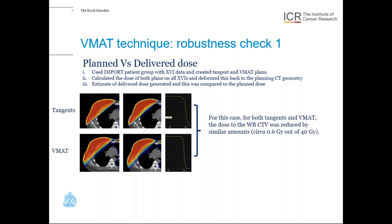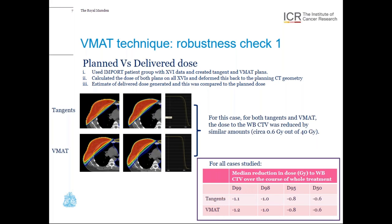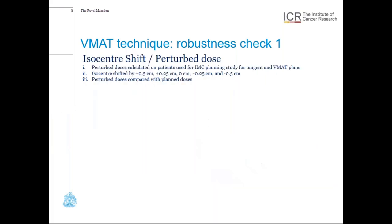We compared the estimated delivered dose to the planned dose. The top row shows the planned dose distribution and, to the right, our estimate of delivered dose, alongside DVHs where the solid line represents planned dose and the dotted line represents estimated delivered dose to the whole breast CTV. The corresponding data for a typical VMAT plan is shown below. For this case, both tangents and the VMAT plan showed the whole breast CTV dose reduced by similar amounts. When we analyzed all patients in this study, we found no difference in the change to CTV coverage for VMAT compared to tangents.